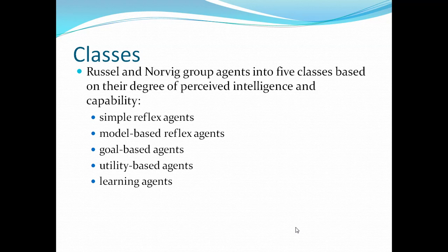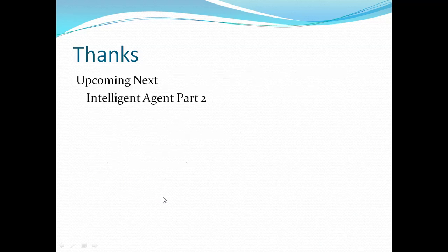These five classes are: simple reflex agents, model-based reflex agents, goal-based agents, utility-based agents, and learning agents. What these agents do and how we can define them will be discussed in the upcoming video, so please watch that video as well to get a clear idea of the different agents. Thank you very much for listening — please like and subscribe for more videos.